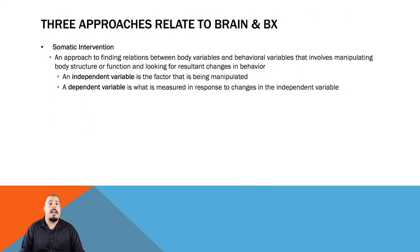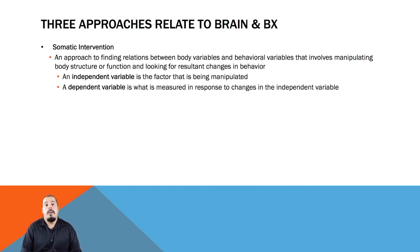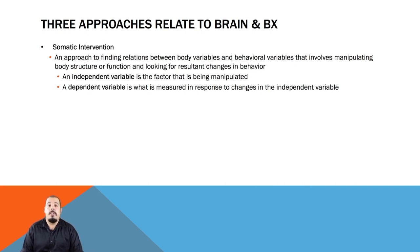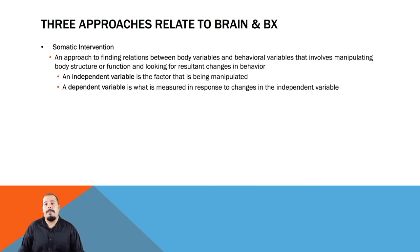Moving on to the three approaches on how to relate brain and behavior to one another: somatic intervention, behavioral intervention, and correlations. In experiments involving somatic intervention, bodily variables are manipulated in a precise and controlled manner and the consequent effects on behavior are noted. Researchers alter a structure or function of the brain or body to see how the alteration changes behavior. The somatic intervention is the independent variable — what is under control of the researcher and applied to the subject. The behavior that researchers measure for an effect is the dependent variable. If the dependent variable changes, the independent variable had an effect.